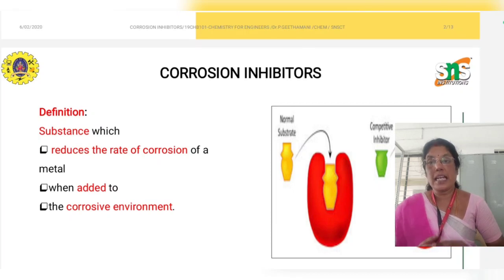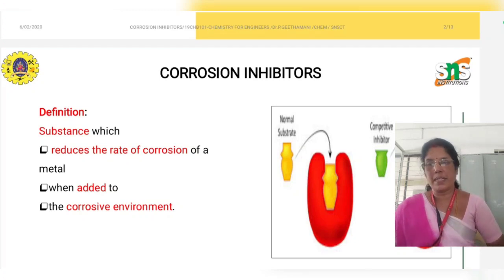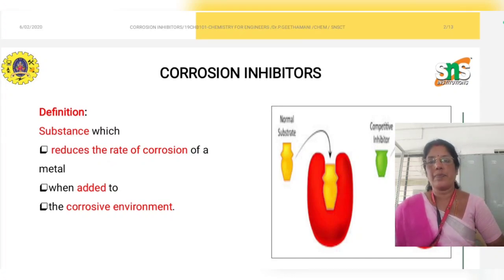Next one is electroplating. Electroplating involves a base metal which is continuously corroding — it can be stopped by plating noble metals over the base metal. These are important techniques to control corrosion, but one of the most important techniques is corrosion inhibitors — chemical substances used to reduce corrosion.